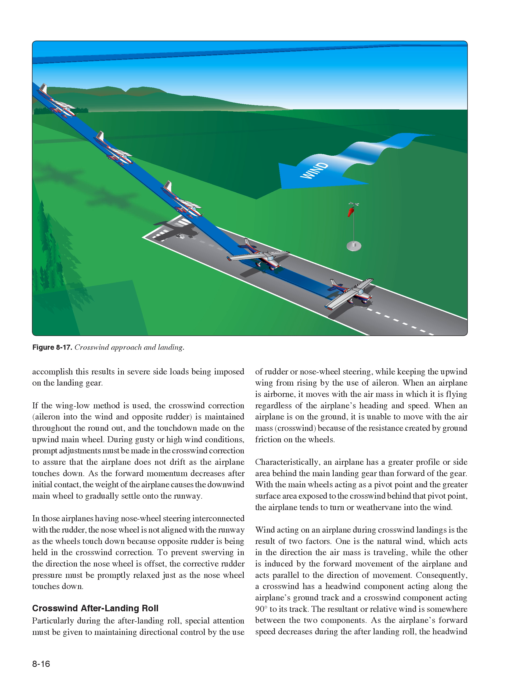If the wing-low method is used, the crosswind correction—aileron into the wind and opposite rudder—is maintained throughout the roundout, and the touchdown is made on the upwind main wheel. During gusty or high wind conditions, prompt adjustments must be made in the crosswind correction to assure that the airplane does not drift as it touches down. As forward momentum decreases after initial contact, the weight of the airplane causes the downwind main wheel to gradually settle onto the runway. In airplanes having nose wheel steering interconnected with the rudder, the nose wheel is not aligned with the runway at touchdown because opposite rudder is being held in crosswind correction. To prevent swerving, the corrective rudder pressure must be promptly relaxed just as the nose wheel touches down.